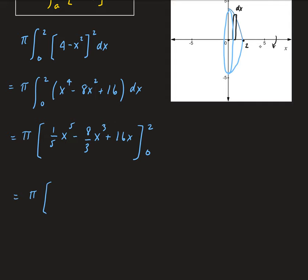So plugging in 2, we're going to get 2 to the 5th. That's going to give us 32. So we have 32 over 5. 2 cubed—that's going to give us 8. So we get minus 64 thirds here.